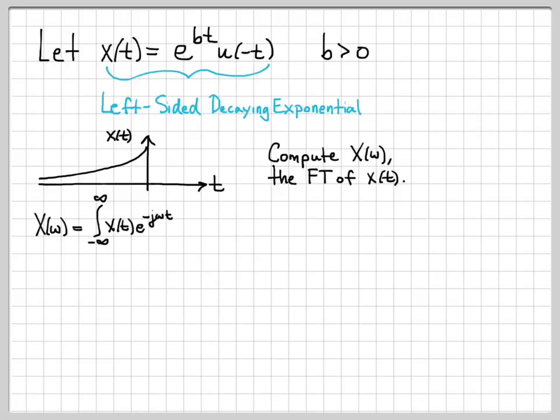We start with the definition of the Fourier transform: the integral from minus infinity to infinity of x of t times e to the minus j omega t dt. For this particular problem, we were told that x of t is e to the bt u of minus t, so we can plug that in along with e to the minus j omega t dt.